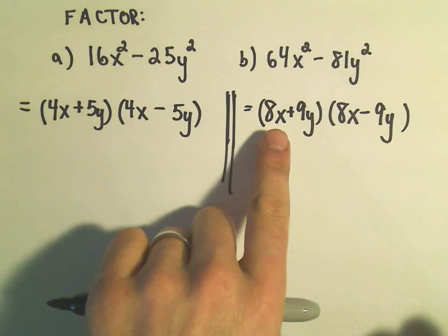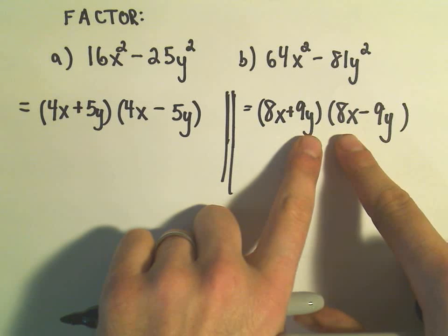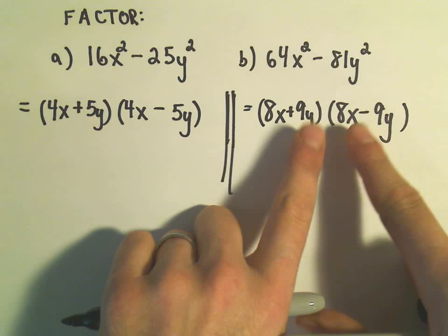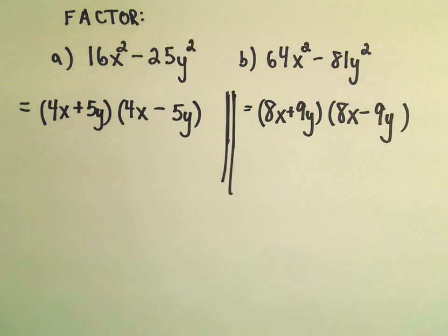Notice if you multiply it out, we'll get 64x squared, a negative 72xy, but also a positive 72xy which cancels, and then our negative 81y squared, just like we wanted.